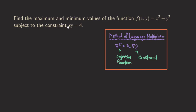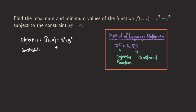We have the objective function and a constraint, and we want to find the maximum and minimum value for this function. Our objective function is f(x,y) = x² + y², and our constraint function — if we move the 4 over — is g(x,y) = xy - 4 = 0.